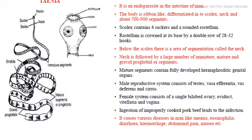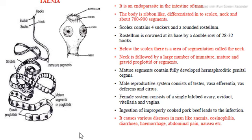The tapeworm body is organized into segments. The immature segment lacks a reproductive system. The mature segment contains both male and female reproductive systems. The gravid proglottid contains fertilized eggs. The gravid proglottids are released through the feces, and if that feces is eaten by a pig, the eggs are present, leading to development of larvae in the body.